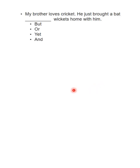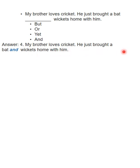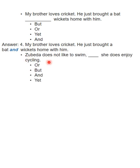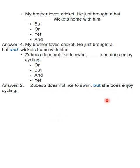اب آپ کا تھوڑا سا exam لیتے ہیں۔ پہلا سوال: 'My brother loves cricket, he just brought a bat ___ a wicket home.' — Answer: 'and' — 'My brother loves cricket, he just brought a bat and a wicket home.' دوسرا سوال: 'Zubaydah doesn't like to swim, ___ she does enjoy cycling.' — Answer: 'but' — 'Zubaydah doesn't like to swim but she does enjoy cycling.' دیکھیں دو جملوں کو اکٹھا کر دیا — کتنی اچھی English بن رہی ہے!